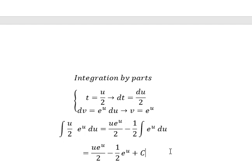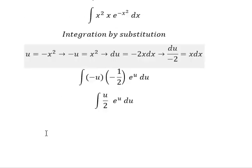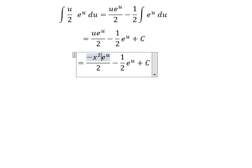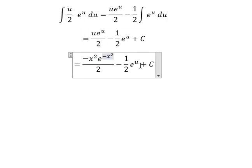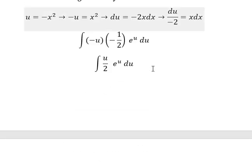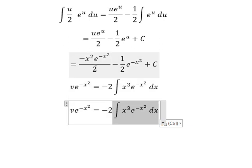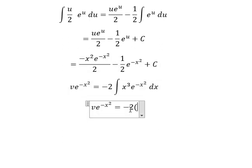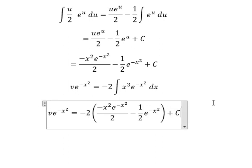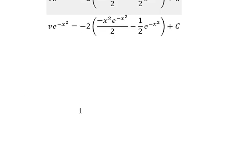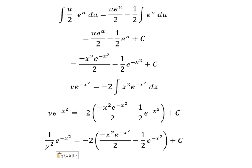Now, about u — that is negative x squared. So I substitute negative x squared back in. Putting those substitutions back into the expression gives us our result. And about v, that is 1 over y squared. Substituting back for v completes the solution. This is the end.